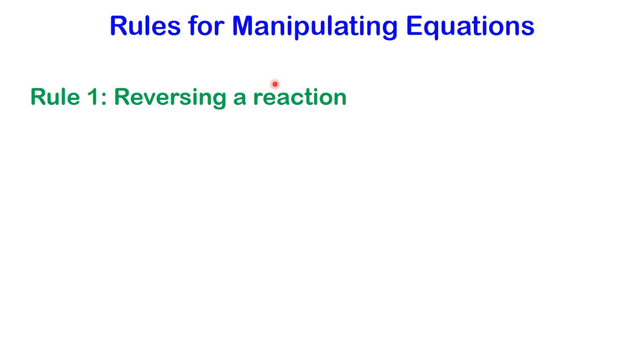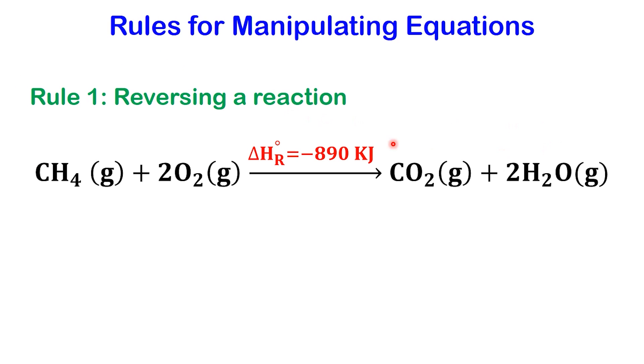Rule 1: Reversing a reaction. If we reverse a chemical reaction, the sign of its delta H also reverses. A negative value becomes positive, and a positive value becomes negative. For example, consider the combustion of methane.